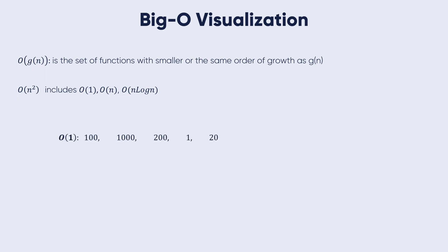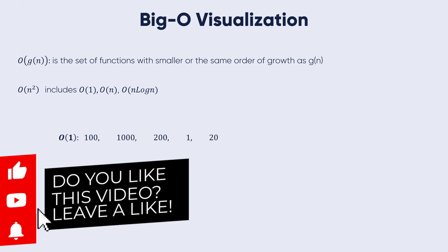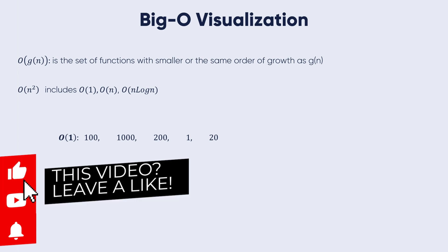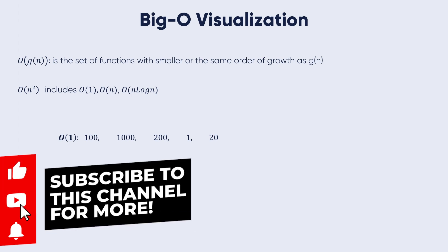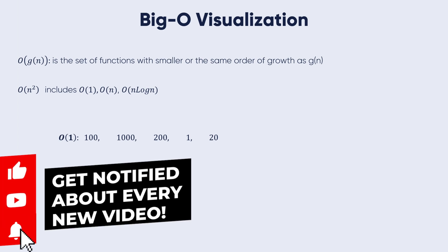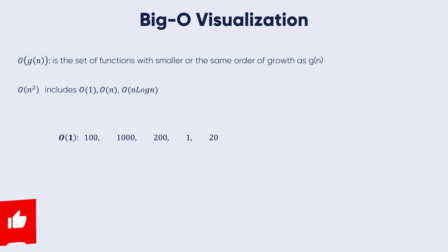For example, if we take O(1), this means it's 100, 1000, 200, 1, 20. This group of numbers will be considered O(1) because we don't have any n. The largest thing here is 1000 which is a constant and it is not multiplied by anything. So it is O(1).